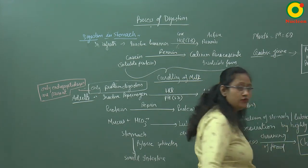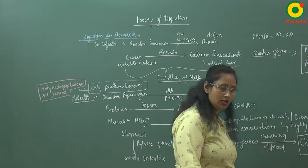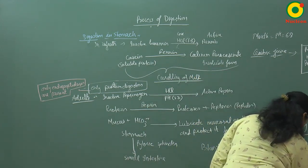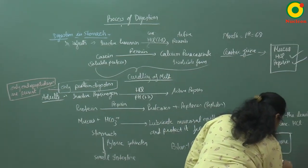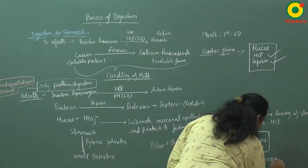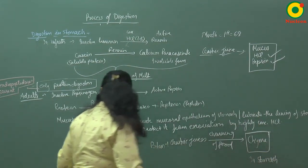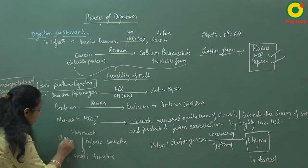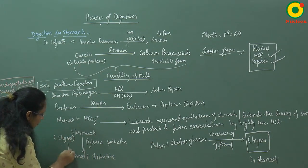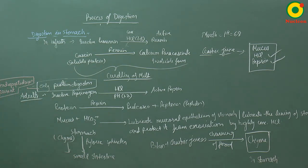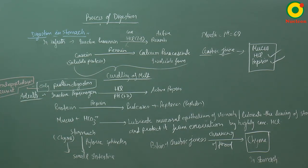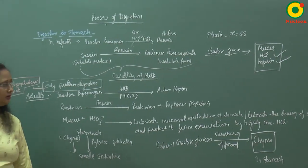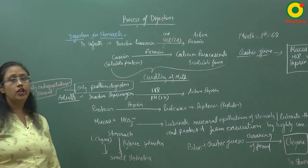So food is present in the stomach in the form of chyme. This chyme from the stomach will come to the small intestine in small amounts by the opening of the pyloric sphincter. Now we will see digestion in the small intestine.